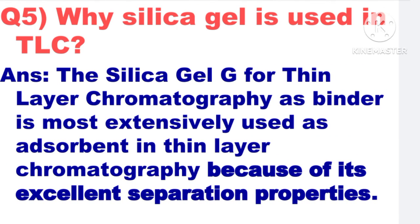Next: Why is silica gel used in thin layer chromatography? Silica gel G for thin layer chromatography with edge binder is most extensively used as adsorbent in thin layer chromatography because of its excellent separation properties.